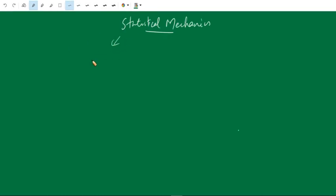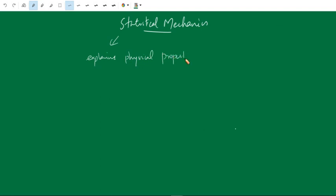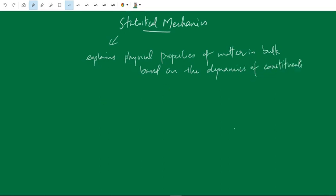Hi guys, welcome to the first lecture of statistical mechanics. In this class I'll be talking about some basic terminologies. Statistical mechanics explains physical properties of matter in bulk based on the dynamics of microscopic constituents. One can derive all of thermodynamics using statistical mechanics based on the motion or statistics of the microscopic constituents.